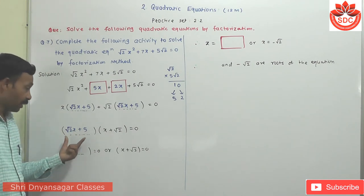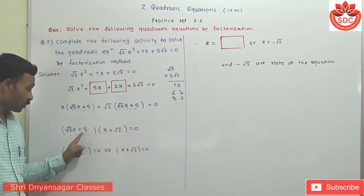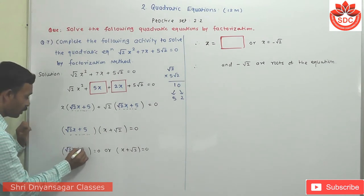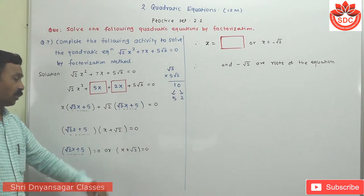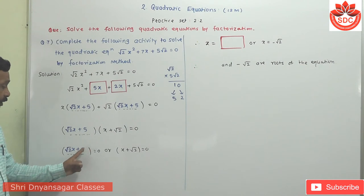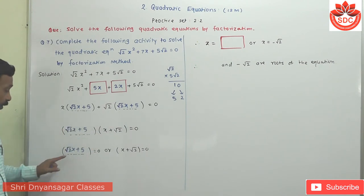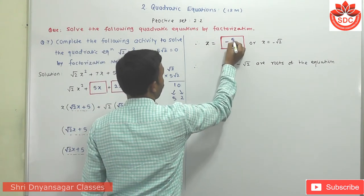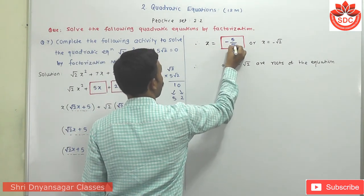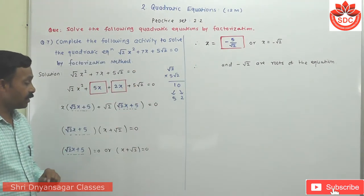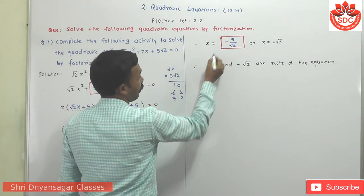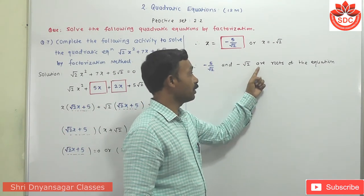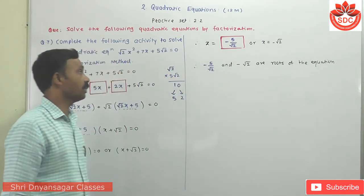By the property that if the product of two terms is 0, then at least one must be 0: √2·x + 5 = 0 or x + √2 = 0. Transposing: √2·x = -5, so x = -5/√2. Or x = -√2. Therefore x = -5/√2 and x = -√2 are the roots of the given equation. This is the solution of this activity.